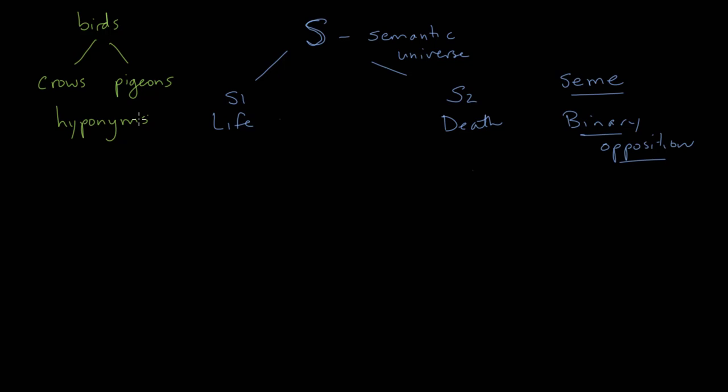These are these kind of equal terms that fall under a larger category. So we would say that the hyponym is a term whose semantic field, whose field of meaning, is included in another word or another term, and this other term is called the hypernym. So some technical jargon there. It's not hugely important, but it gives you a sense of how life and death relate back to the larger semantic universe.